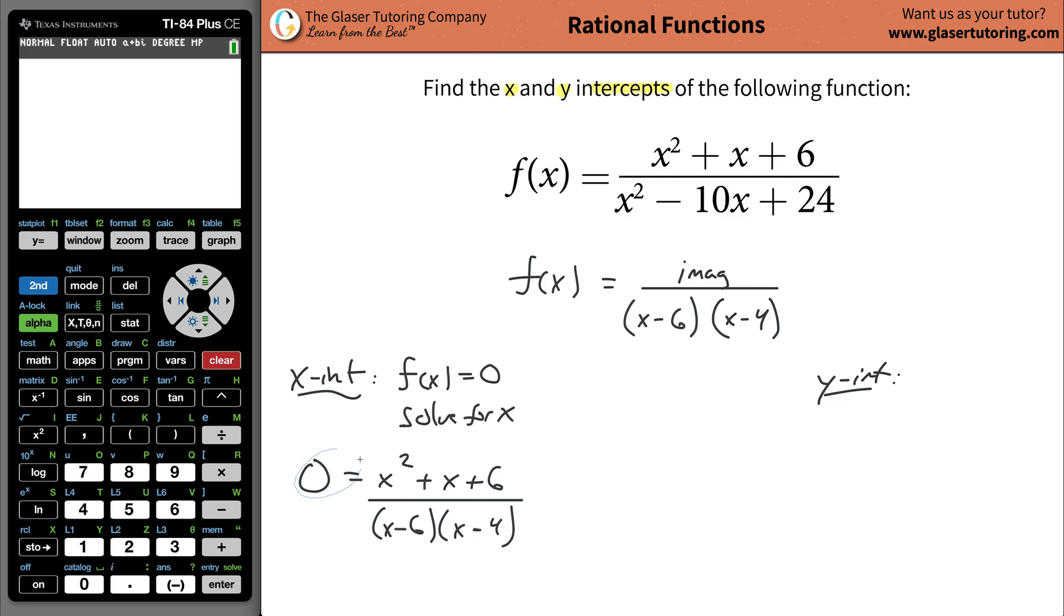When you cross multiply to solve for x, you take the denominator and multiply by zero. The whole denominator just goes away. So you take your numerator and set that equal to zero. That's how you find the x intercept.